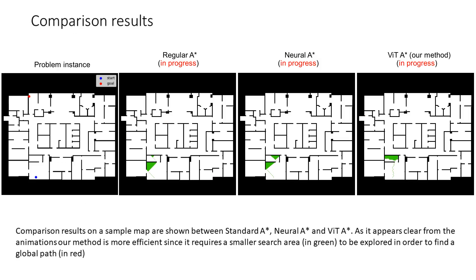Our method has shown to be more efficient in finding a path due to the reduction of the search area. An example of this is shown here, with start and goal positions shown in the problem instance image in blue and red respectively, and the search area by different algorithms depicted in green.